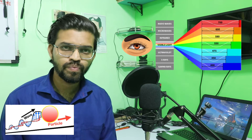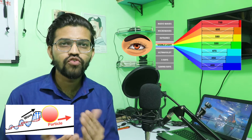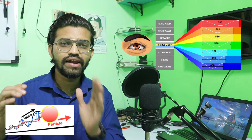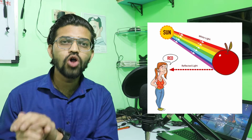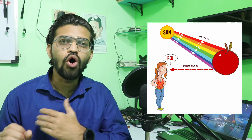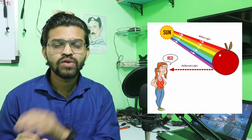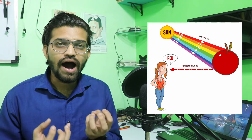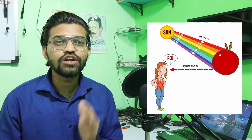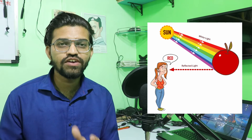When you see a particular object, that object reflects light back to you. When you see an object that is red in color, that object absorbs all the wavelengths of the other colors and reflects only red — that's why it appears red to your eyes. Similarly, a white body reflects back all the wavelengths of light, which is why it appears white.